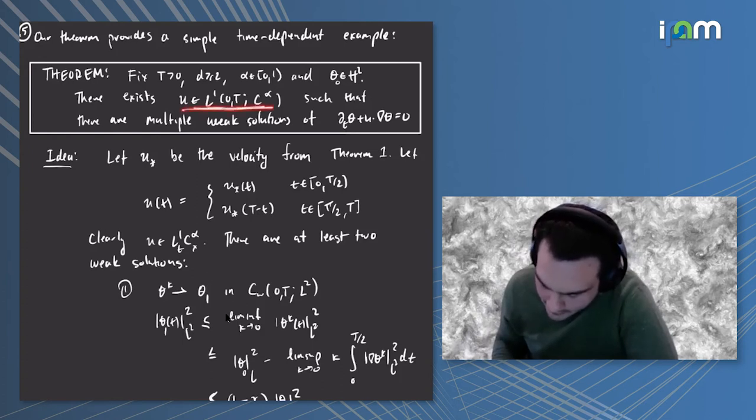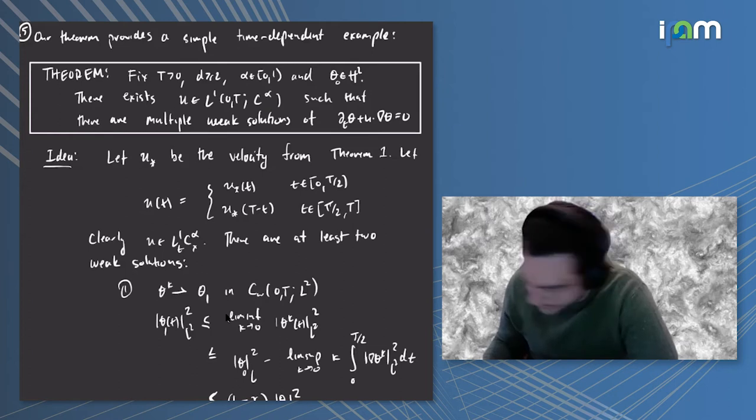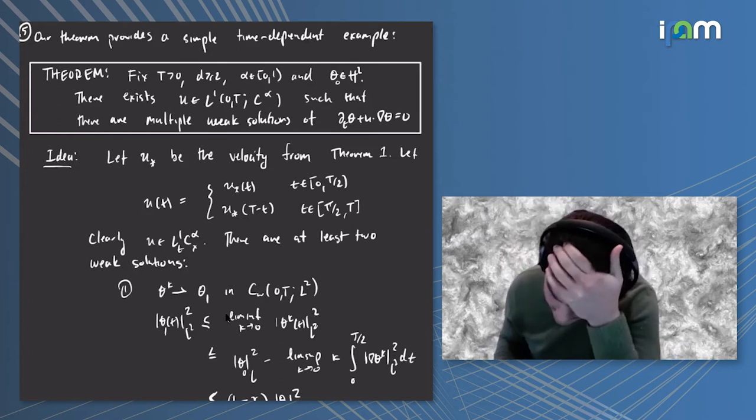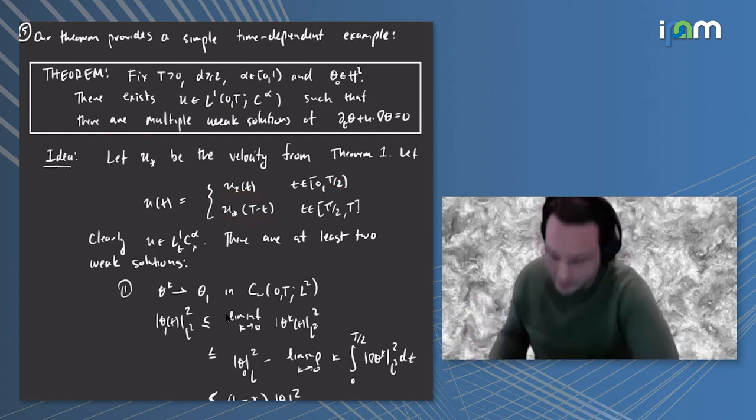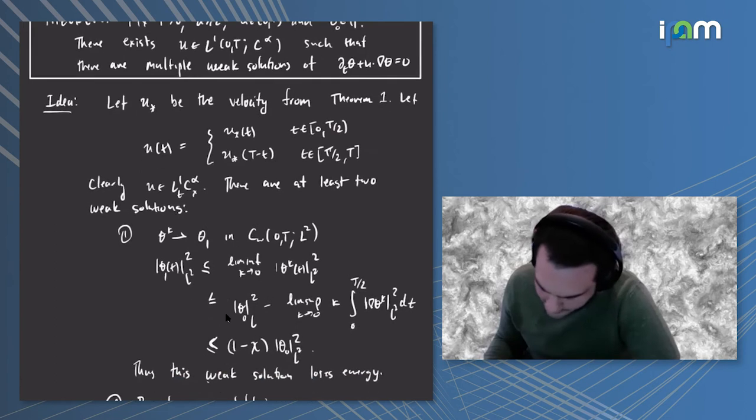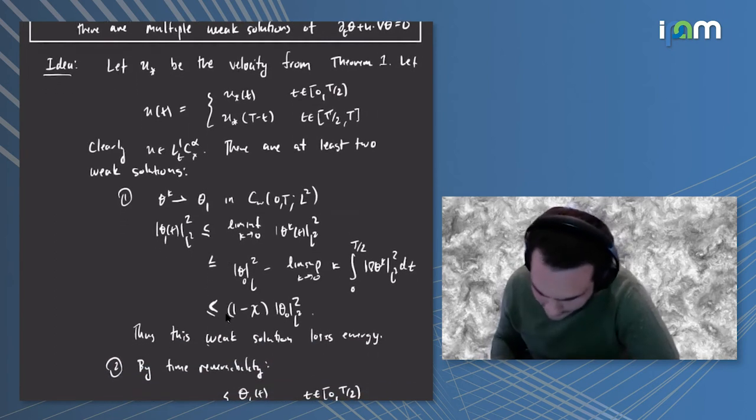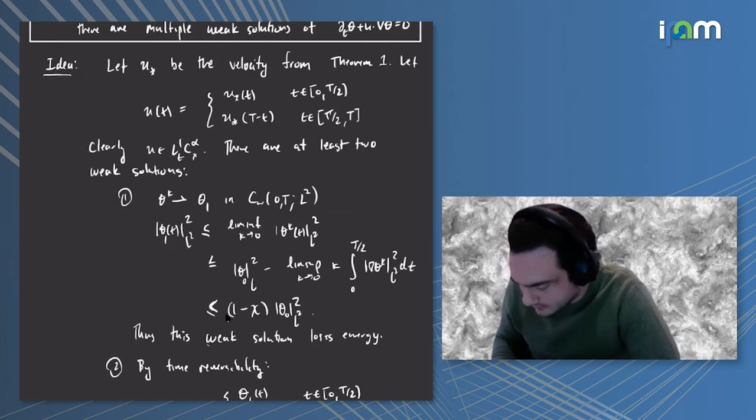The theorem that we proved has a similar implication although it's weaker. It gives an example of an L1 in time C^α velocity field for which there are multiple weak solutions. It's weaker because now this velocity field is time dependent. The proof is a direct consequence of the previous result. You take the velocity field that worked in the previous theorem and you piece it together. At a certain time, let's call it t over two, you go with that velocity field up till that time and then after that you time reverse it.